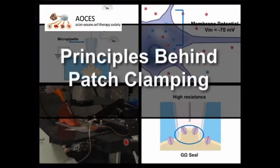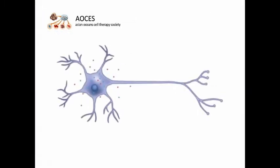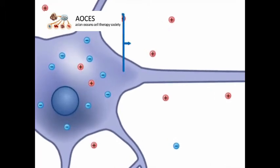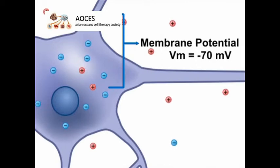First, let's review the principles behind patch clamp recording. The number of positive and negatively charged ions inside a neuron differs from the number found on the outside. This imbalance produces a voltage difference, or membrane potential, of about minus 70 millivolts, meaning that the inside is more negative than the outside.